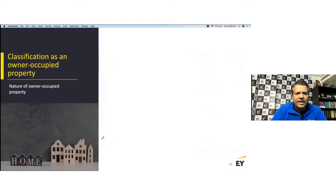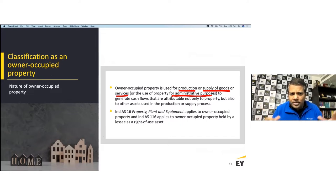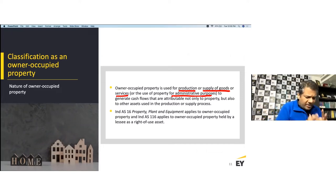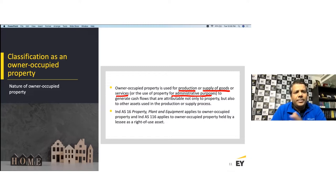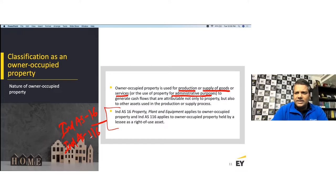Owner-occupied property is used for the production or supply of goods or services, or for administrative purpose, generating cash flows attributable not only to the property but also to other assets — it is interlinked with other parts of the business. Investment property generates cash flows independently of other assets. Ind AS 16 on property, plant and equipment applies to owner-occupied property, and Ind AS 116 for leases.